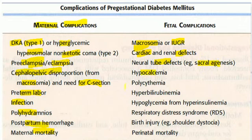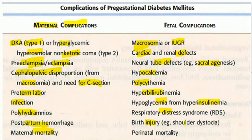Hypocalcemia, polycythemia, hyperbilirubinemia, hypoglycemia from hyperinsulinemia — high insulin in the blood can lead to hypoglycemia. Respiratory distress syndrome, birth injuries like shoulder dystocia, and perinatal mortality.